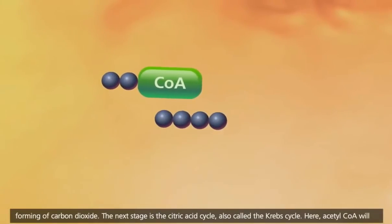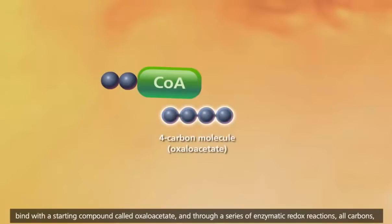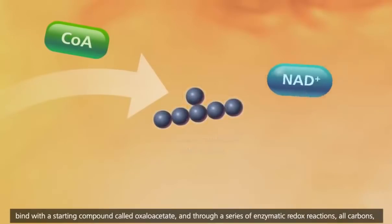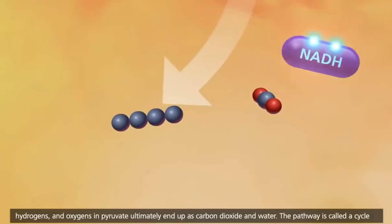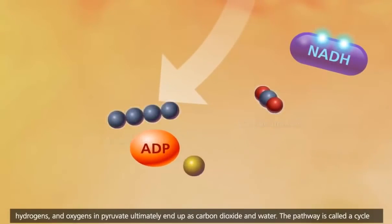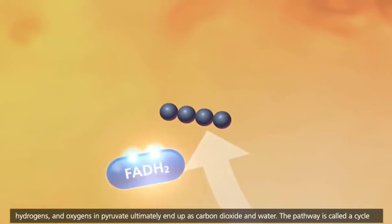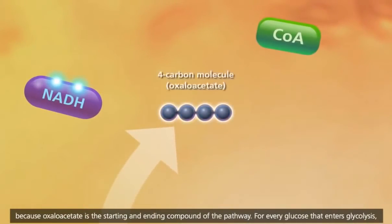The next stage is the citric acid cycle, also called the Krebs cycle. Here, acetyl-CoA will bind with a starting compound called oxaloacetate, and through a series of enzymatic redox reactions, all carbons, hydrogens, and oxygens in pyruvate ultimately end up as carbon dioxide and water. The pathway is called a cycle because oxaloacetate is the starting and ending compound of the pathway.